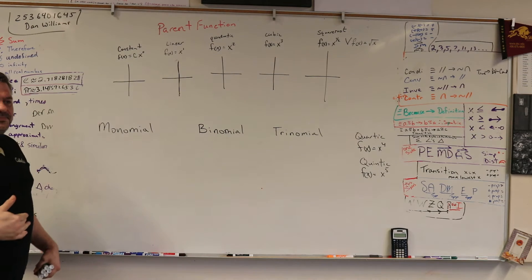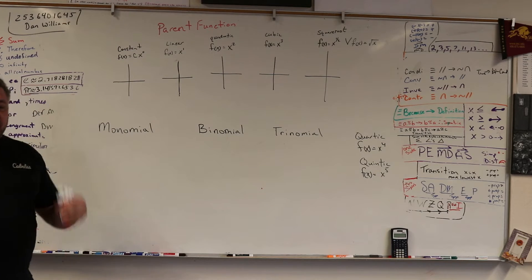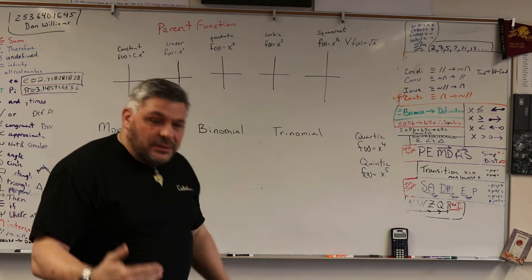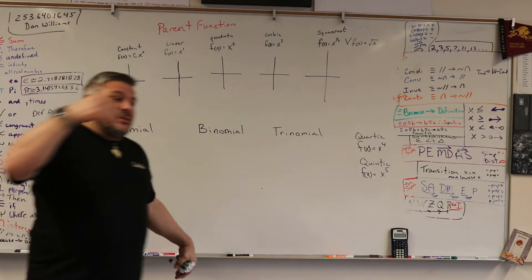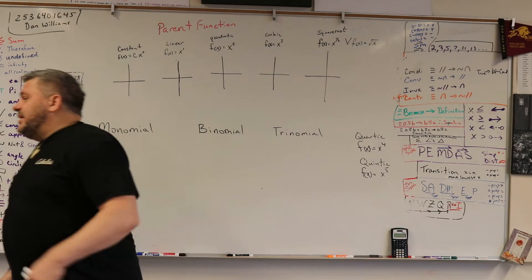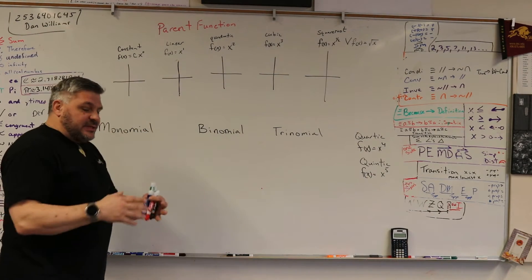So what is a constant function? A constant function is a function where you have like f of x equals three, or f of x equals two, or f of x equals negative 10. It's a number. It's a constant.